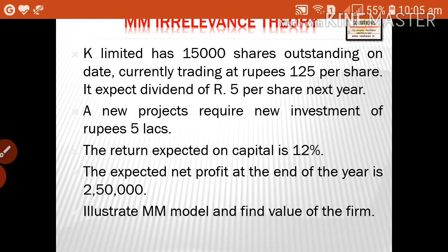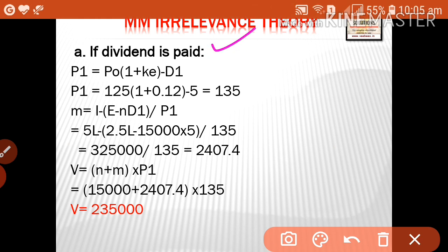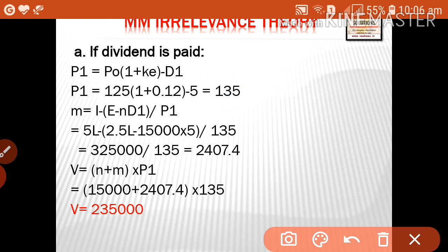To illustrate the M.M. model, we calculate the price of share and the value of the firm under two alternatives: when dividend is paid and when dividend is not paid. As per M.M. model, the value of the firm in both cases will be the same. For the first alternative — if dividend is paid — calculate P1: P1 = P0 × (1 + Ke) − D1 = 125 × 1.12 − 5 = 135.